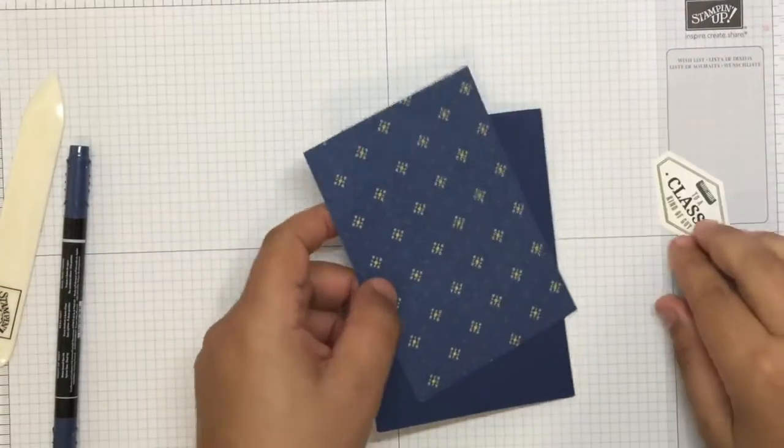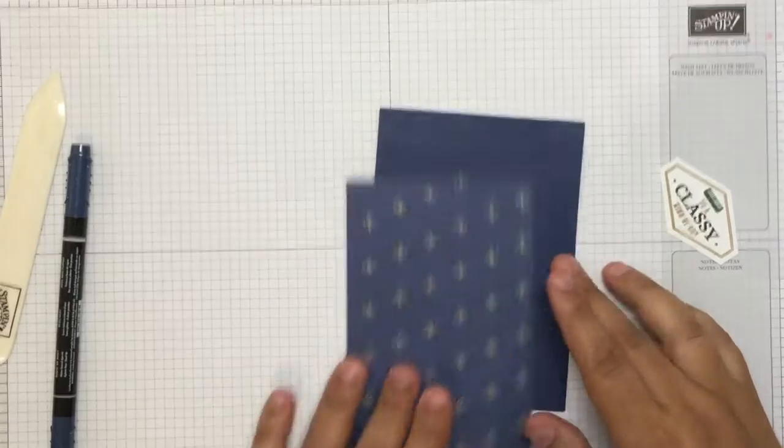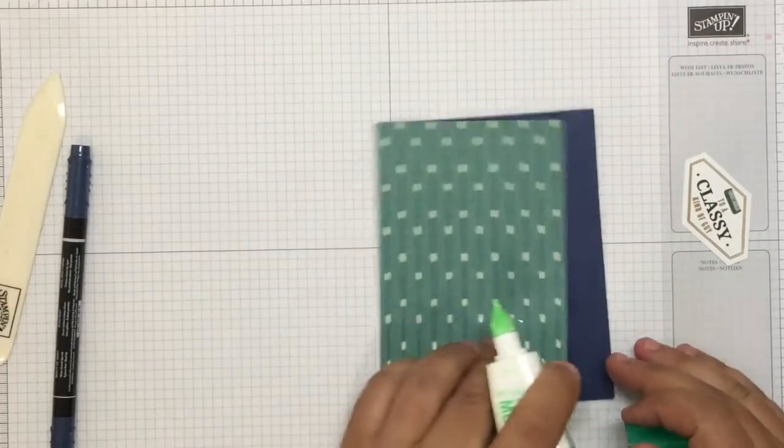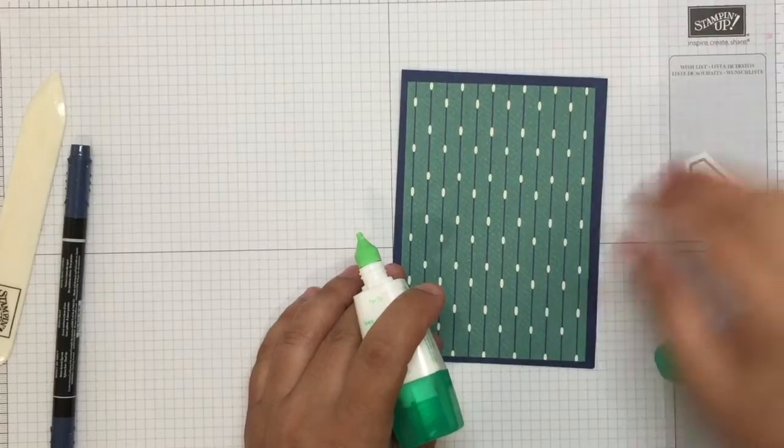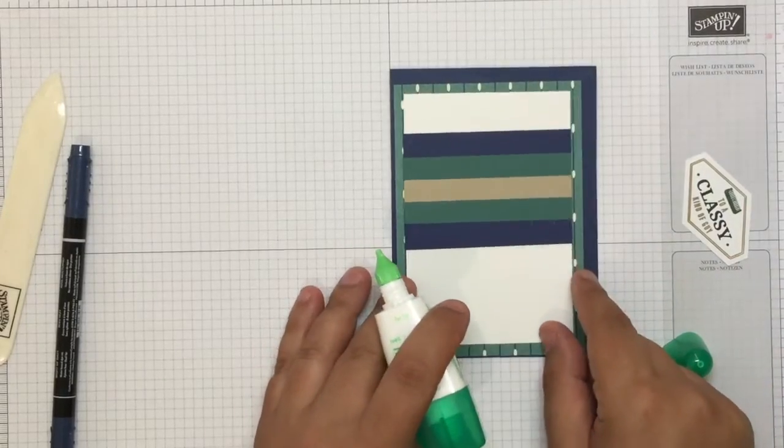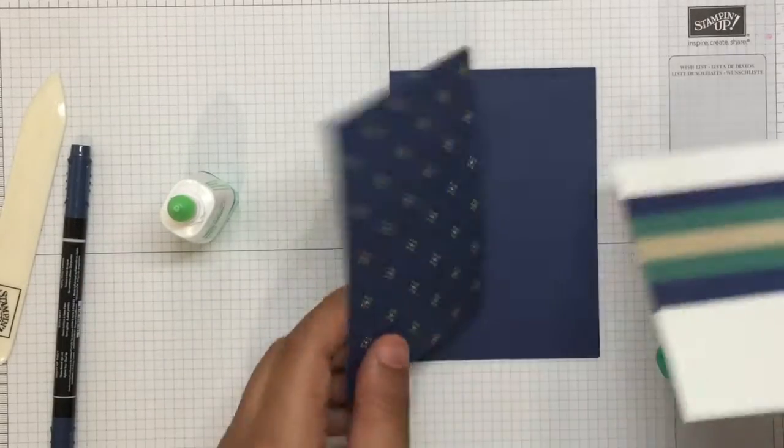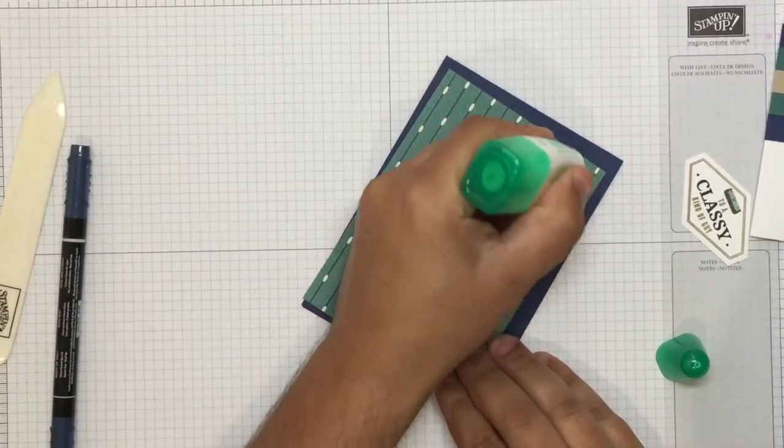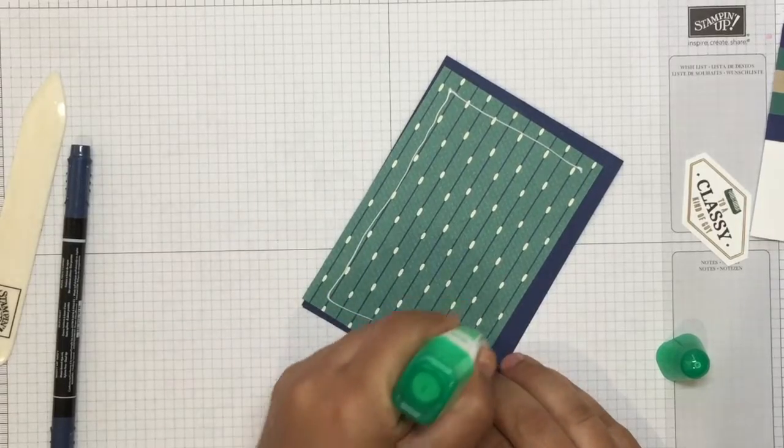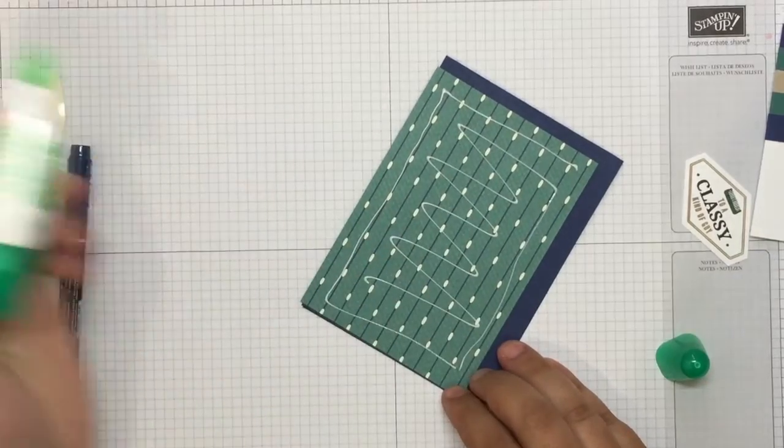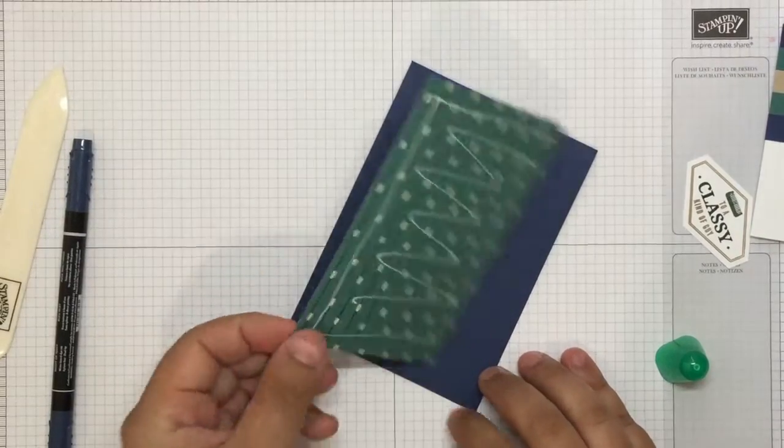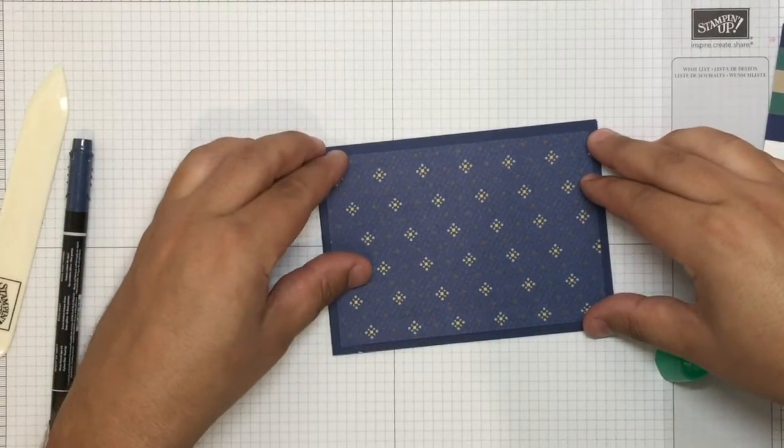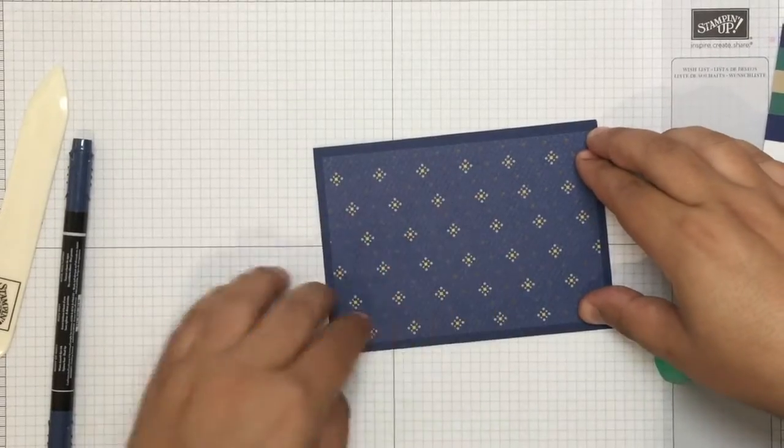So, now let's assemble this card together. So, I'll stick that down just directly with some Tombow. Should I use that side? What do you think? Nah. I think I'll use the other side. Yeah, that's nicer. Look, I like this color, but I think it's better on the other side.